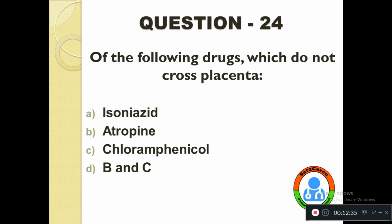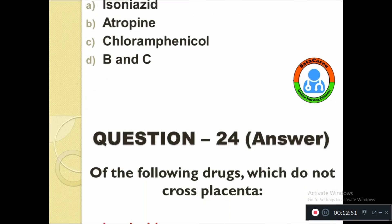Question number twenty-four: Of the following drugs, which does not cross the placenta? Option A: Isoniazid, B: Atropine, C: Chloramphenicol, D: BHC. The correct answer is Isoniazid.